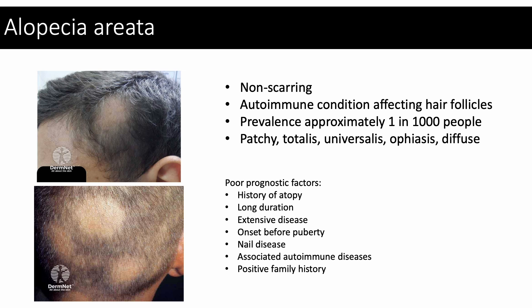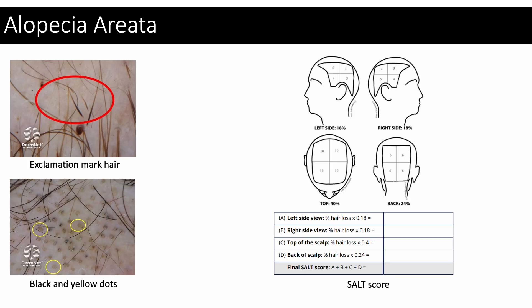Factors associated with poor prognosis include a history of atopy, long duration of disease, extensive disease, onset before puberty, involvement of nails, association with other autoimmune diseases, and a positive family history. In terms of clinical examination, you may see exclamation mark hairs or blood dots which are suggestive of active disease, or yellow dots which are seen in chronic disease and suggest preservation of follicular ostia.